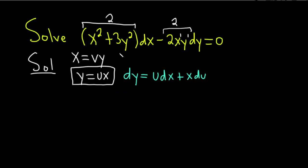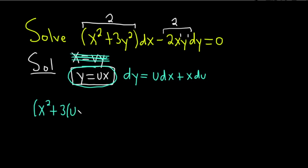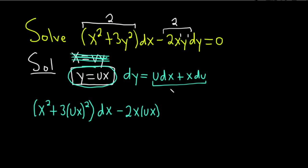Now we carefully make the substitution into our differential equation. x is simply x, so we have parentheses x squared plus 3 times (ux) squared, dx. Then minus 2 times x times ux times the quantity (u dx plus x du), and that equals zero. It's really easy to mess up in these problems, so it's always good to go a little bit slow.